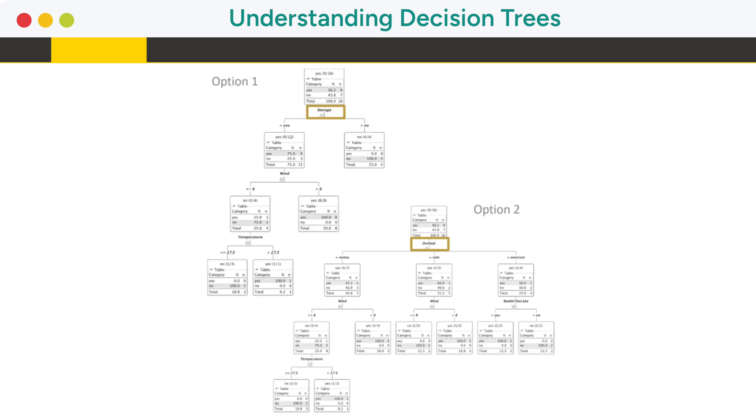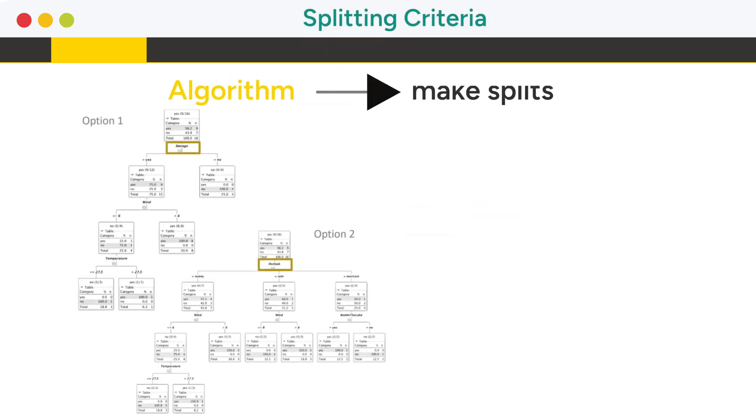Instead of just one possible classification tree, the algorithm selects the best feature to split the data set. The algorithm aims to make splits that result in the purest subsets. At each step, the algorithm uses the feature that leads to the purest subsets.